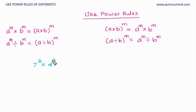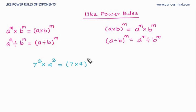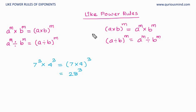Let's do another one: 7 raised to 3 multiplied by 4 raised to 3. The base is different but the power is the same, so the answer's power will remain 3. For the base, we multiply: 7 × 4, giving us (7 × 4) raised to 3 = 28 raised to 3. We will solve more problems in our next video to understand the use of these two rules and their variations.